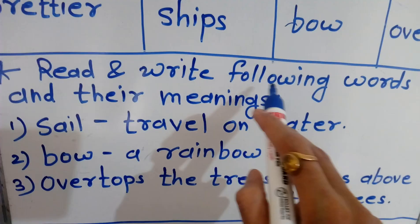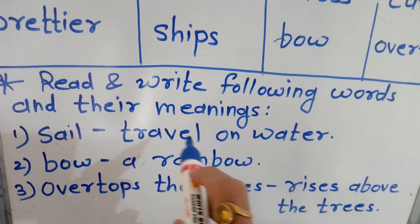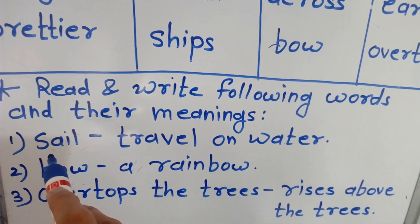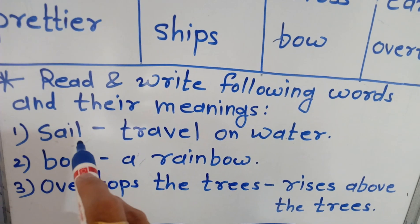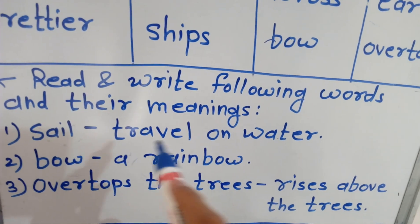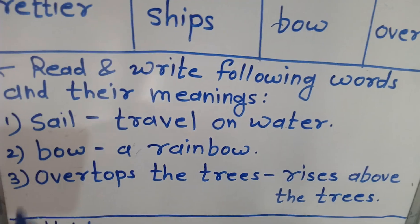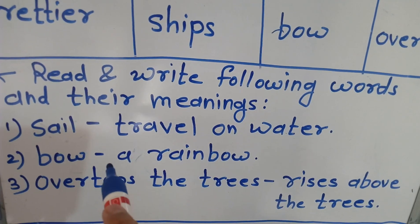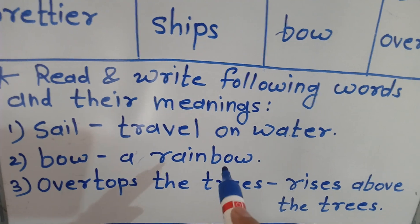Read and write the following words and their meanings. The first word is Sail. S-A-I-L, Sail. The meaning of Sail is: travel on water. The second word is Bow. The meaning of Bow is: a rainbow.